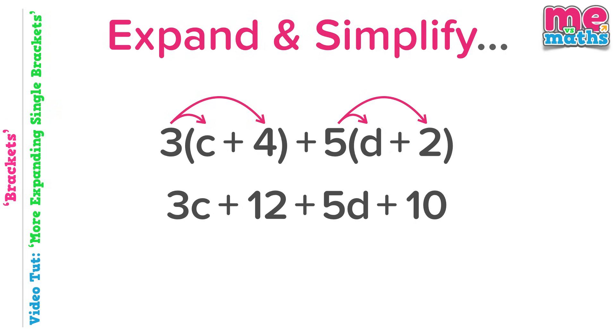Now we can simplify this expanded expression. The c's and the d's cannot be collected together, so we keep 3c plus 5d. However, what we have left are just numbers, so we can simplify this part. Twelve plus ten is obviously twenty-two, so we can put plus twenty-two on the end. We've expanded the brackets and simplified the result as much as we can.